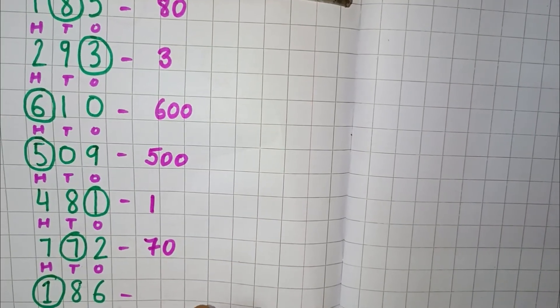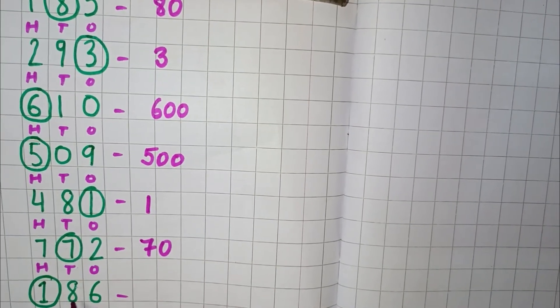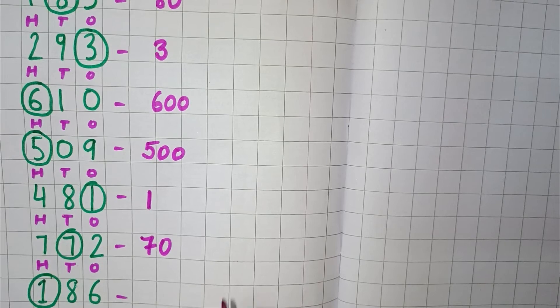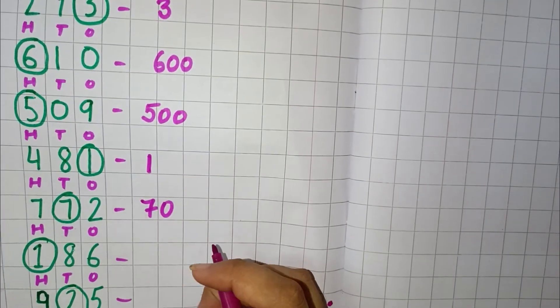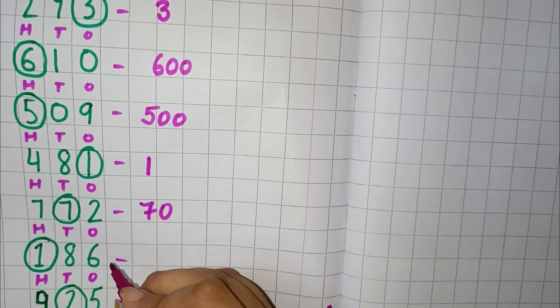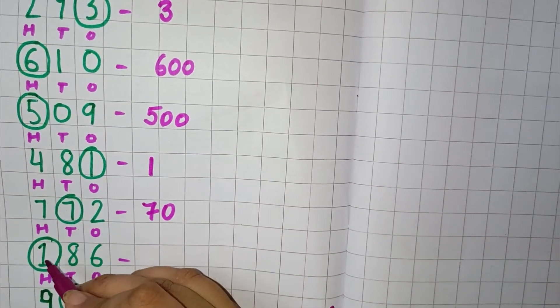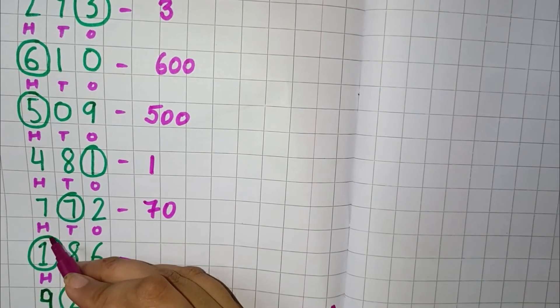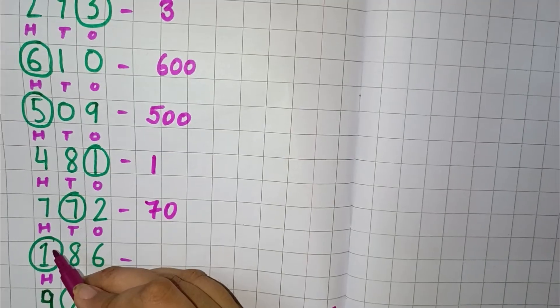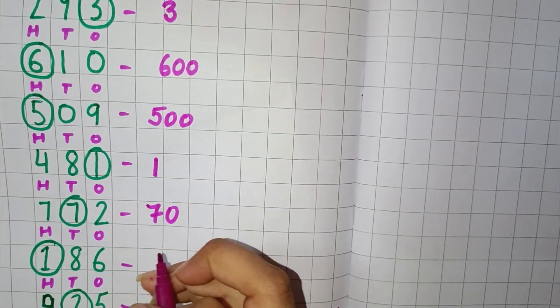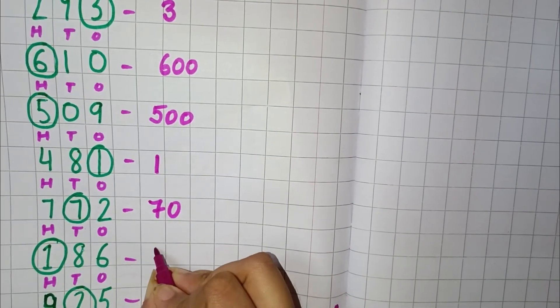Next we have 186. Here 6 is in the 1's place, 8 is in the 10's place, and 1 is in the 100's place. 1 is circled here, so we will write here 100.